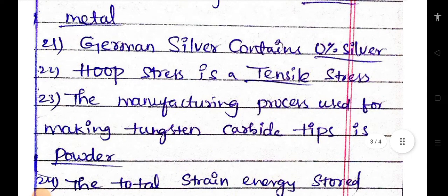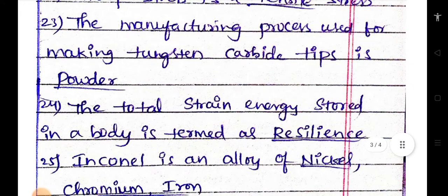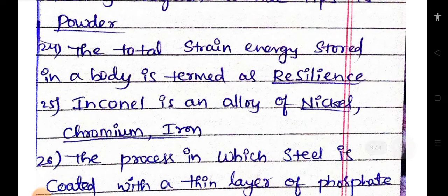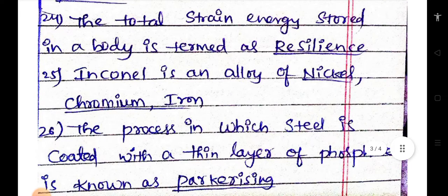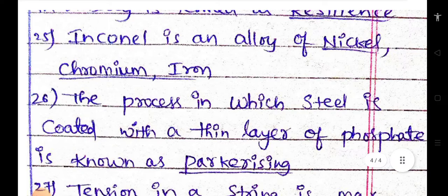The measure of the stiffness is modulus of elasticity. The metal suitable for bearing subject to heavy load is white metal. German silver contains zero percent silver. Hoop stress is a tensile stress. The manufacturing process used for making strong tungsten carbide tips is powder metallurgy. The total strain energy stored in a body is termed as resilience. Inconel is an alloy of nickel, chromium, iron. The process in which steel is coated with a thin layer of phosphate is known as parkerizing.